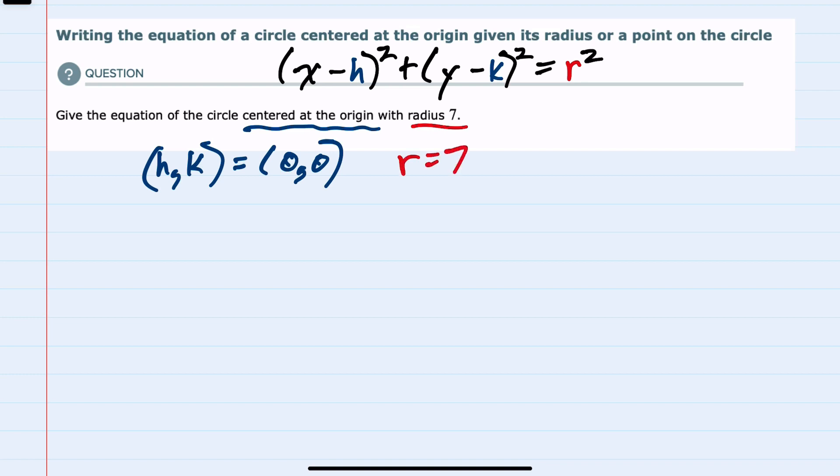So substituting into our standard form, we have (x - 0)² + (y - 0)² equals r, which is 7 squared.